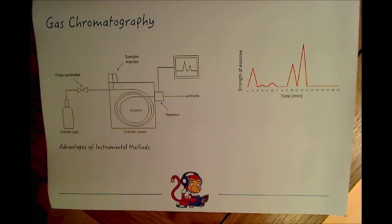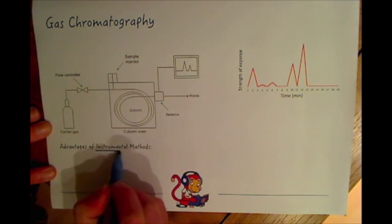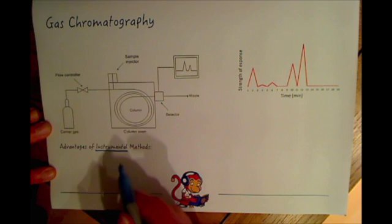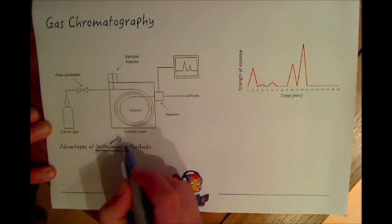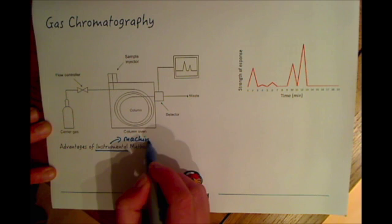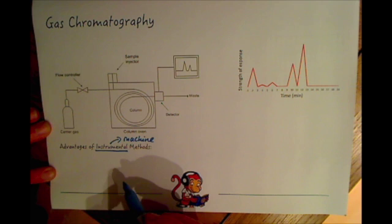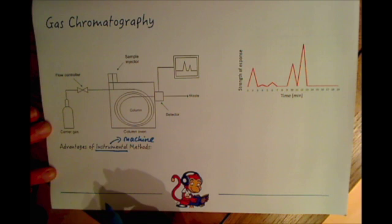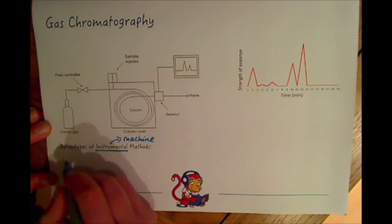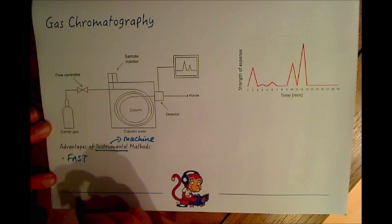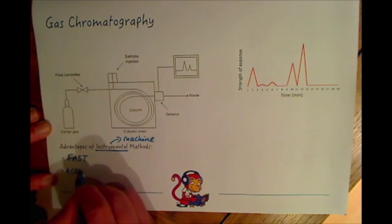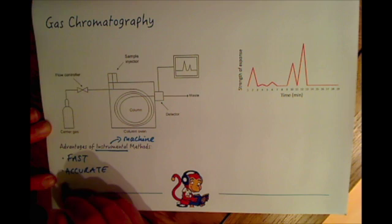This video is about gas chromatography, which is an example of an instrumental method. Instrumental method essentially means using a machine. You need to know the advantages of using an instrumental method like gas chromatography over other methods to separate substances. There are three main reasons why instrumental methods are good: they are fast, they are accurate, and they are sensitive.